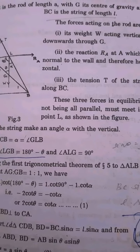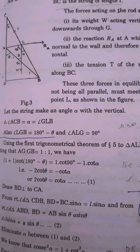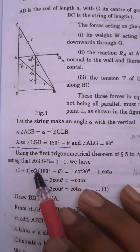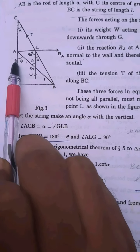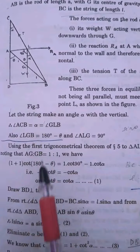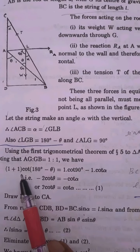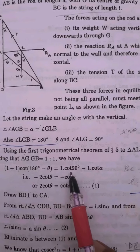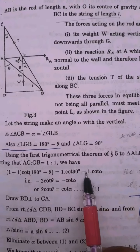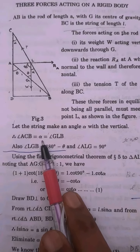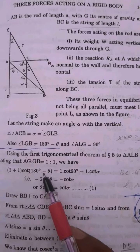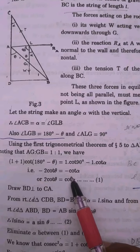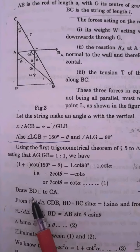Now we will apply the trigonometric m-n theorem: (m+n) cot θ = m cot α − n cot β. Here AG to GB, G is the center of gravity, so AG to GB is 1 to 1, meaning m = 1 and n = 1. So (1+1) cot(180−θ) = 1·cot α − 1·cot(90°), giving −cot θ = cot α, and therefore 2 cot θ = cot α.